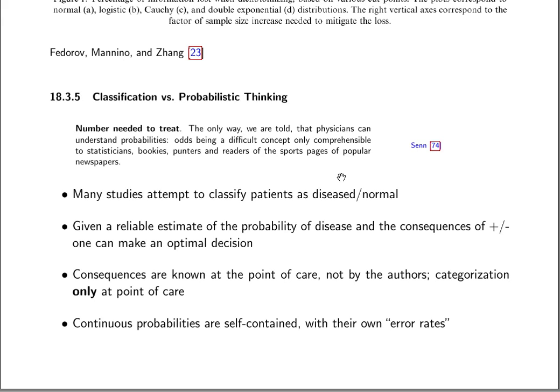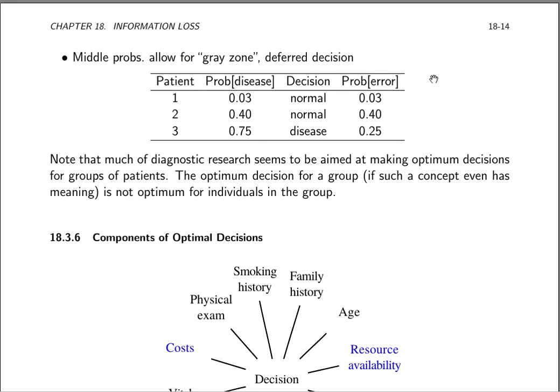The beauty of probabilistic thinking is that continuous probabilities are self-contained and they are their own error rates. Consider three patients with three different estimated probabilities of disease. A patient with a risk of disease estimated to be 0.03, treated as if the patient does not have the disease, will by definition have a 0.03 chance of being an error. A patient in the middle with a probability of disease of 0.4, treated as if the patient is normal and so the drug or surgery isn't given, will have a probability of being wrong of 0.4. A patient with a higher chance of disease treated as if she really does have disease — if the probability of disease is 0.75 — then the chance of being wrong in treating the patient is by definition 0.25.